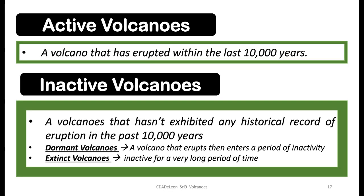There are two types of volcanoes: active and inactive. Active volcanoes are volcanoes that have erupted within the last 10,000 years, while inactive volcanoes have no historical record of eruption in the past 10,000 years. There are two types of inactive volcanoes: dormant volcanoes, which erupt then enter a period of inactivity, and extinct volcanoes, which are inactive for a very long period of time.